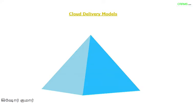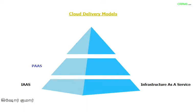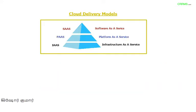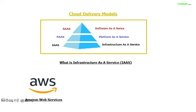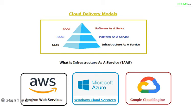In the cloud delivery model, the pyramid has three layers: at the bottom is IaaS — Infrastructure as a Service; in the middle is PaaS — Platform as a Service; and at the top is SaaS — Software as a Service. Major cloud providers offering all three services include Amazon Web Services, Microsoft Azure (Windows Cloud Services), and Google Cloud Engine.